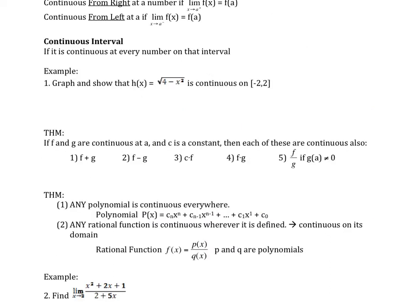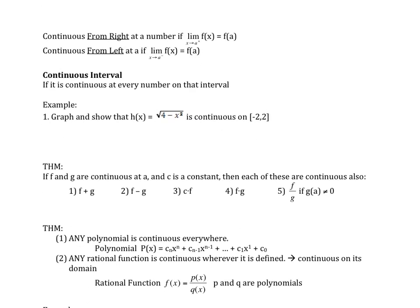We can say something is continuous on the whole interval, continuous just from the right, or continuous just from the left — so we can specify where the continuity is. But if it's continuous on a whole interval, then it must be continuous at every number on that interval.